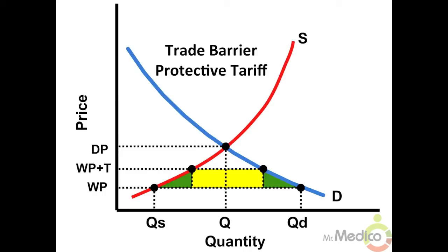The market graph shows the effects of a per-unit tariff. DP represents the domestic price, WP represents the world price, and WP plus T represents the world price with a tariff. The lightly shaded rectangle is the total tariff revenue collected by the government, and the two shaded triangles represent the deadweight loss or inefficiency created by the tariff. We will revisit this graph in Noble 11.